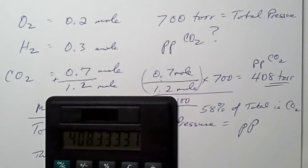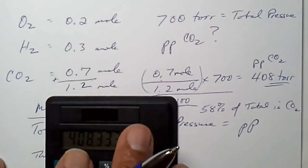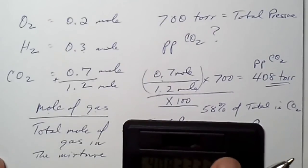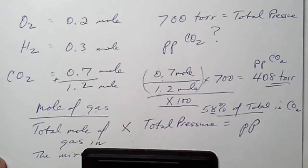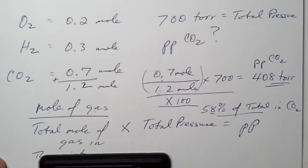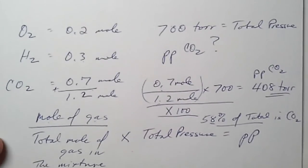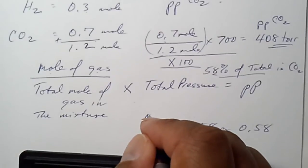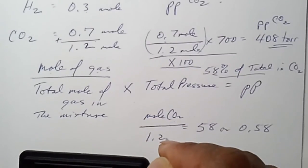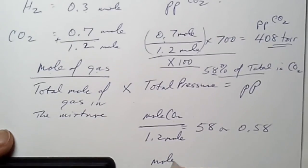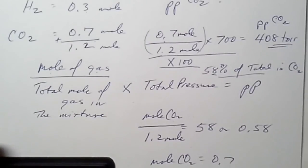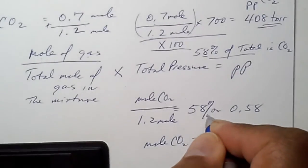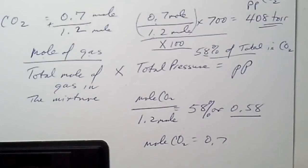That's how we determine partial pressure — we can start off with moles. Sometimes we may be given a percent of the gas, and we can simply revert back. We know the percentage, 58 percent or 0.58, equals the moles of CO2 over the total moles. We can determine what the moles of CO2 is simply by reversing our math. That's how you represent 58 percent — as 0.58 in the equation. That's partial pressure; not very difficult.